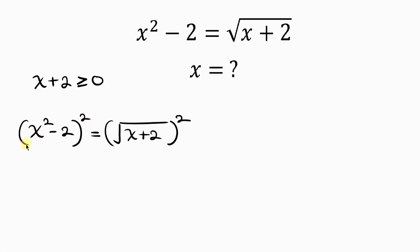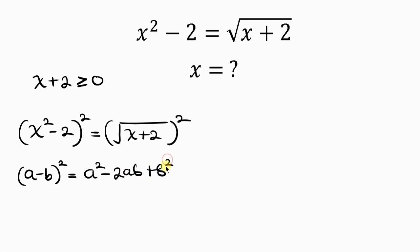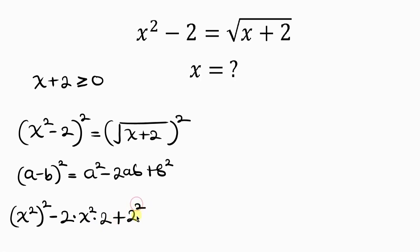Taking the square of the left, the left-hand side is of the form (a minus b) squared, which equals a squared minus 2ab plus b squared. So we'll have x squared raised to the power of 2, minus 2 times x squared times 2, plus 2 squared. And this is equal to the right-hand side — the square cancels out the square root — so that we have x plus 2.